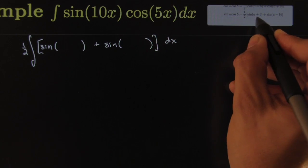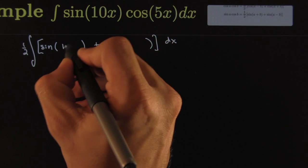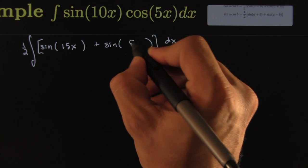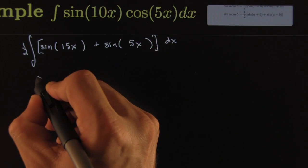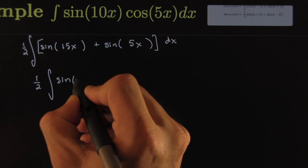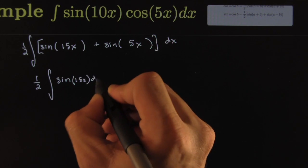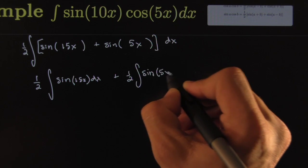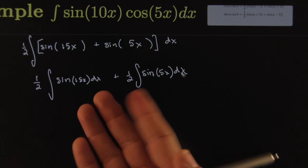In here I should put the sum of the two angles, so the sum of two angles looks like 15x. In here I should put the difference of the two angles which looks like 5x. So all together I have one-half integral of sin(15x)dx plus one-half integral of sin(5x)dx.